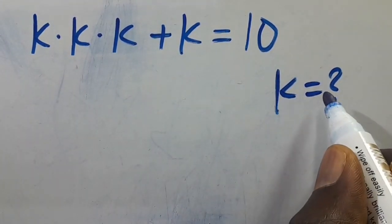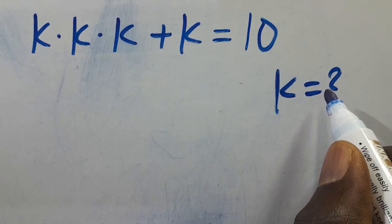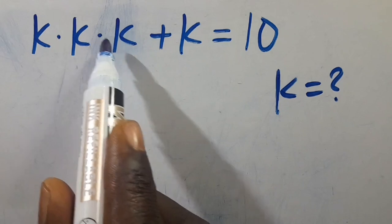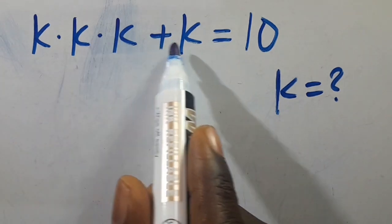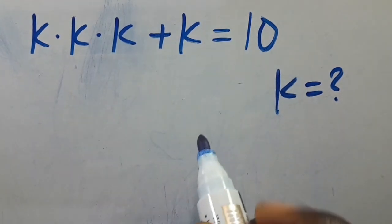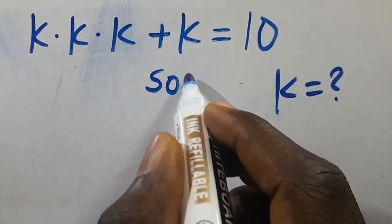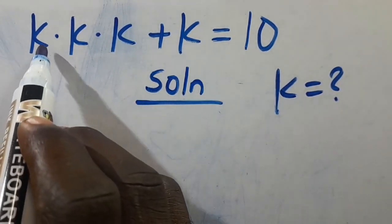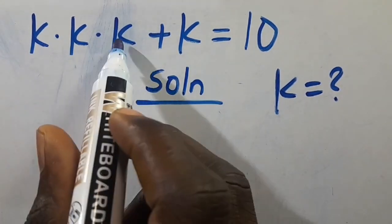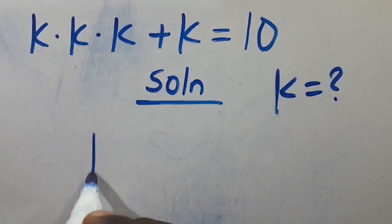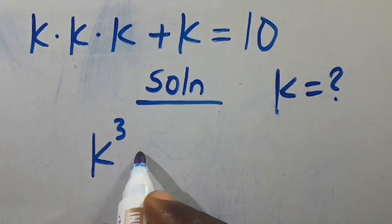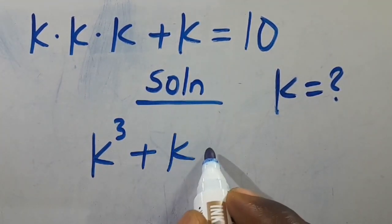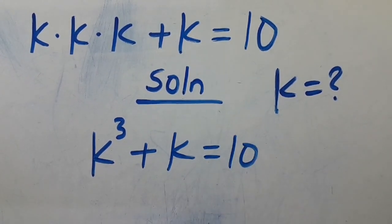Hi, what is the value of k? Given that k multiplied by k multiplied by k plus k equals 10. From here, k multiplied by k multiplied by k gives us k to the power of 3, so k to the power of 3 plus k equals 10.